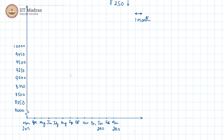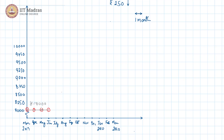Now we begin to mark out the points. We know that in the month of March the price was 8000, so this is the point for March. Then in April, May and June the price stayed constant, and this portion can be represented using a horizontal line.